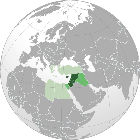The term entered English in the late 15th century from French. It derives from the Italian Levante, meaning 'rising,' implying the rising of the sun in the east, and is broadly equivalent to the Arabic term al-Mashriq, meaning 'the land where the sun rises.'